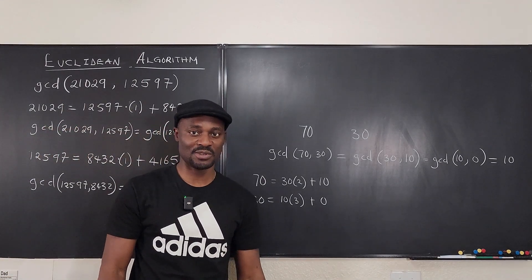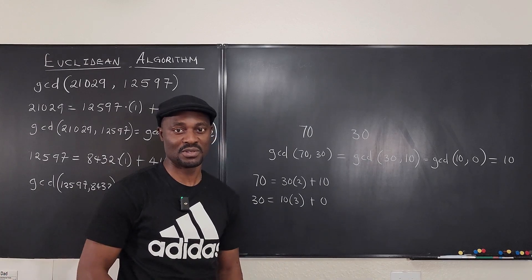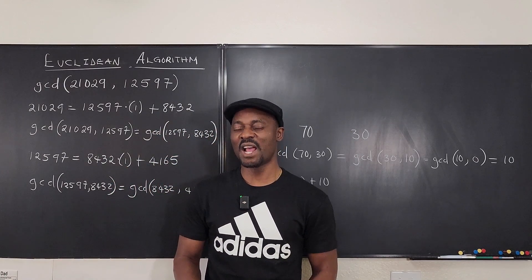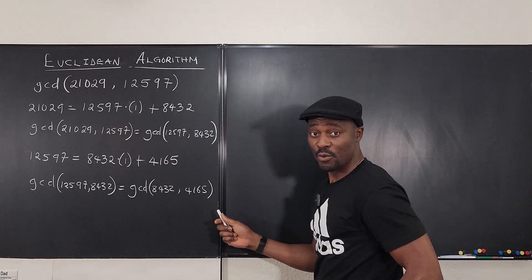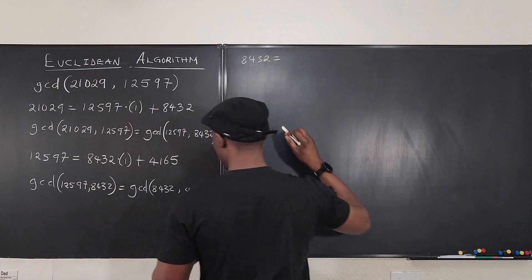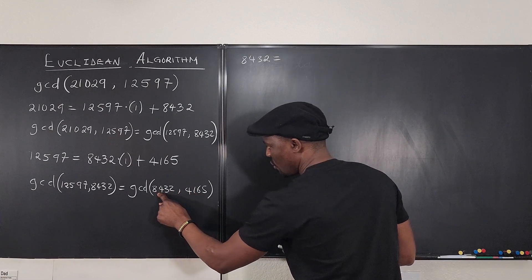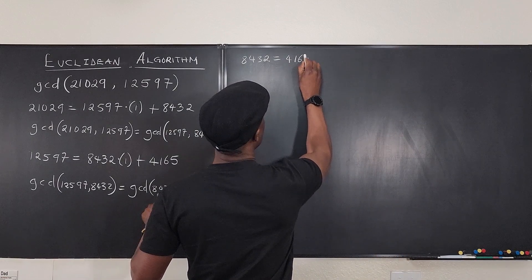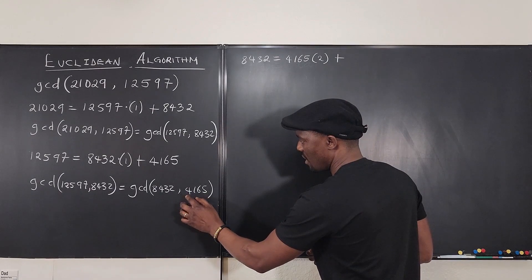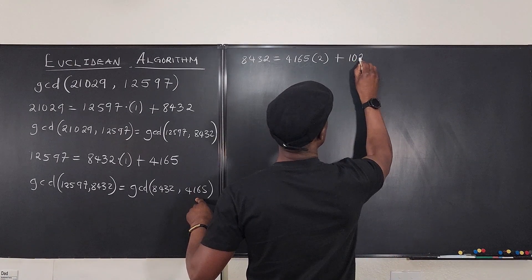That's how you continue the sequence — that's why it's called an algorithm. You can even write a program to find the GCD of any two large numbers, no matter how large, just keep reducing. Taking one more step: 8432 can be written as 4165 multiplied by 2, plus a remainder. Doubling 4165 gives 8330, so the remainder is 102.